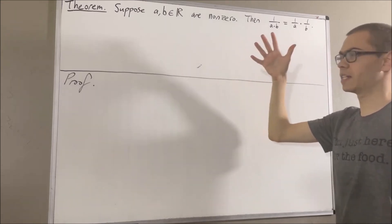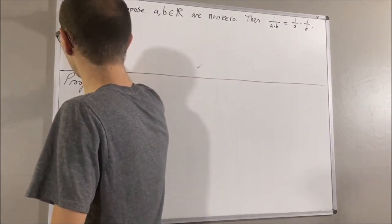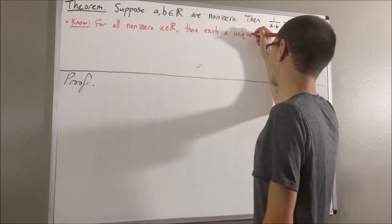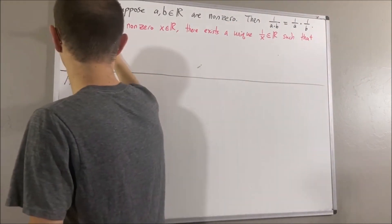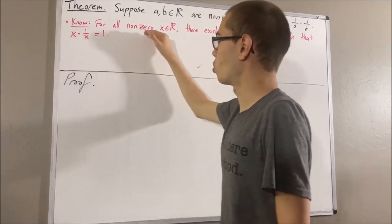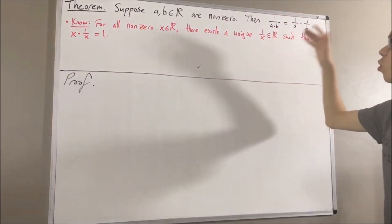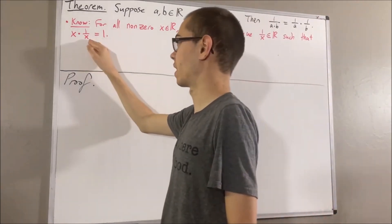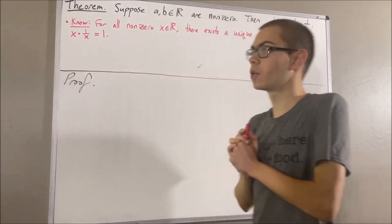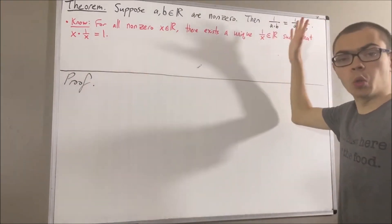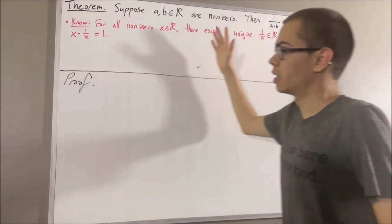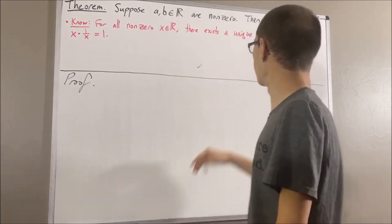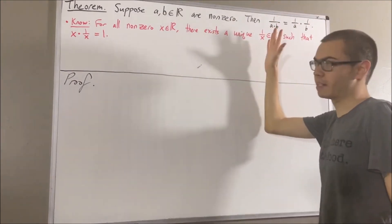One of those properties is the following: For all non-zero real numbers x, there exists a unique real number which we denote by 1 over x, which has the property that x times 1 over x is equal to 1. So really, 1 over x is the only real number such that if we perform x times 1 over x, we get 1. And we call 1 over x the reciprocal of x.